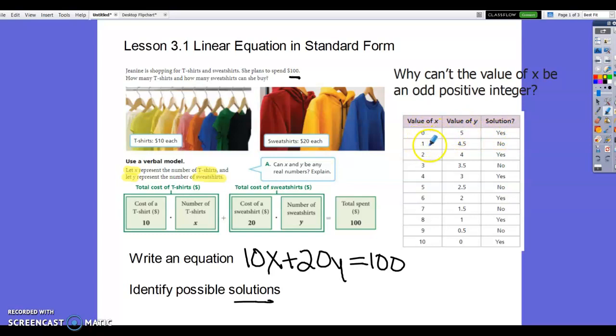If we have one t-shirt, we would have four and a half sweatshirts. Well, we can't have four and a half sweatshirts. So that answer would be no. And then if I have two t-shirts, two X's, then I would have four Y's. And again, two and four are whole numbers, they're integers. So we can have that as a solution.